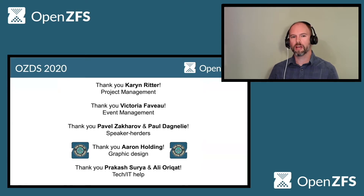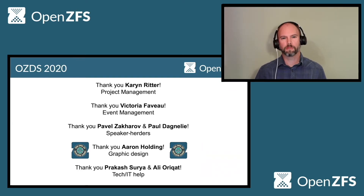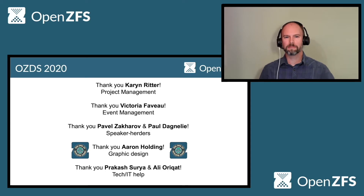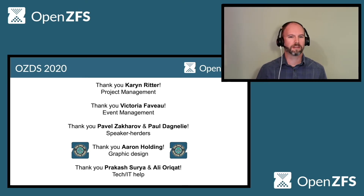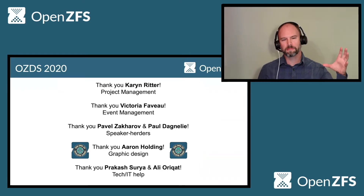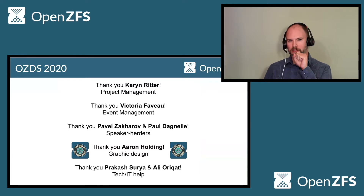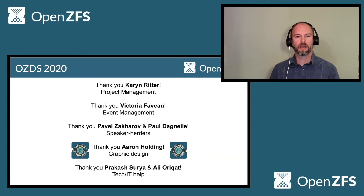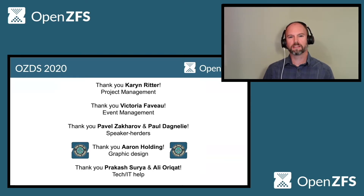Thank you Aaron for graphic design. This cool graphic logo for this year's conference was designed by Aaron, and he designed the graphics for many of our conferences in the past. If you don't recognize what that little thing is in the middle, it's part of the emergency warning system here in San Francisco. Since we couldn't all be here in San Francisco together, we wanted to bring a little bit of San Francisco to you. Those are like four little speakers — every week you hear a test of the emergency broadcast system throughout the city. And also thank you to Prakash and Ali for help with all the technical details, making sure that Zoom and YouTube and everything work right.